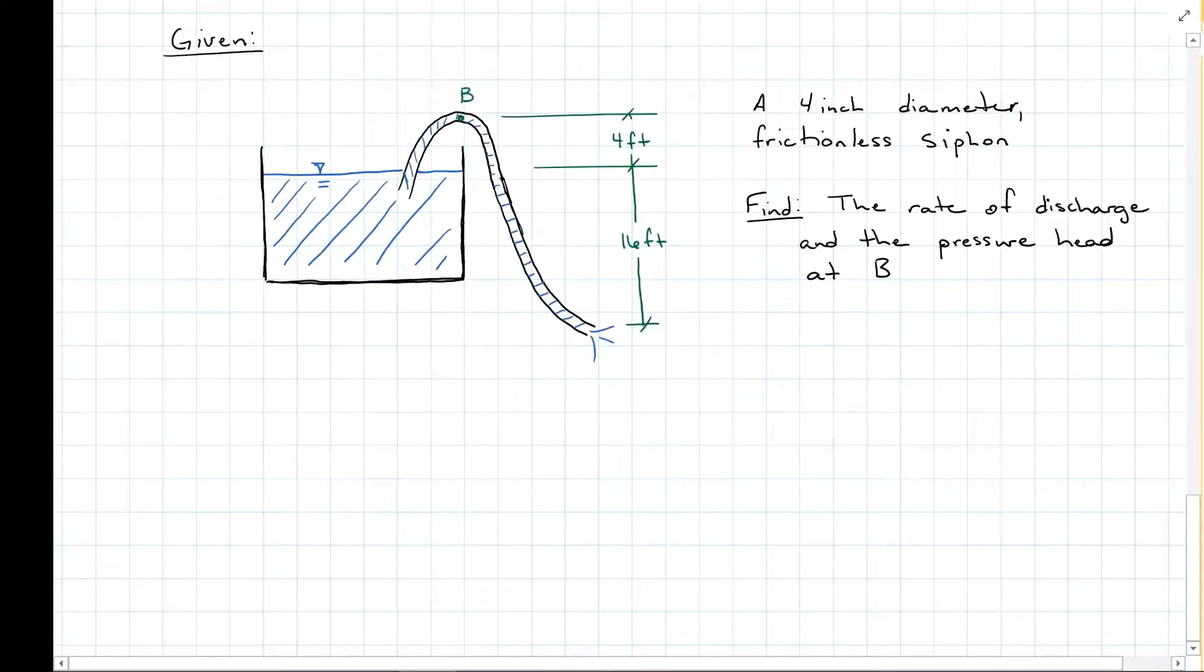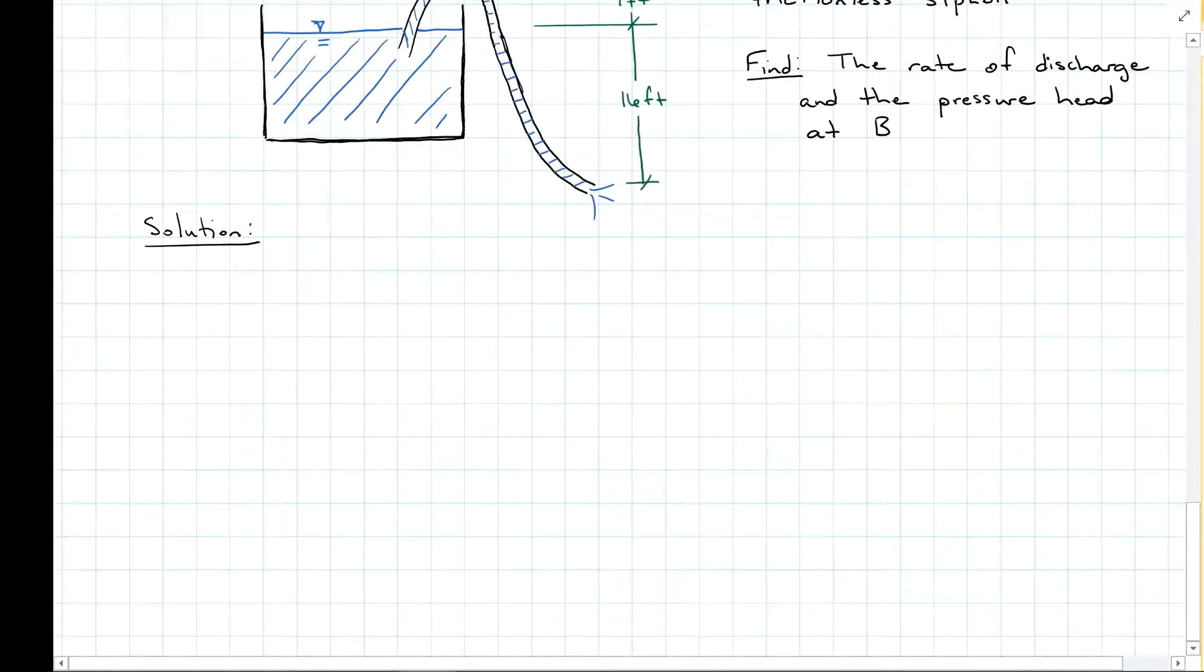Here we have a tank that is full of water and it has a 4-inch diameter siphon. You see it coming up over the edge of the tank and siphoning out. So the tank is open to the air and the siphon is open to the air, frictionless siphon. Find the rate of discharge and the pressure head at B. The rate of discharge is going to be Q, and because we do not have a change in mass, we can assume that this water is incompressible.